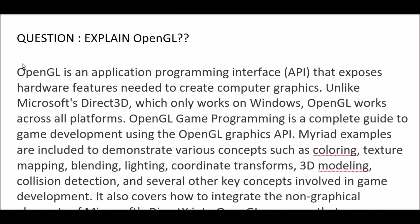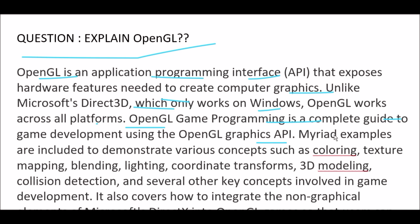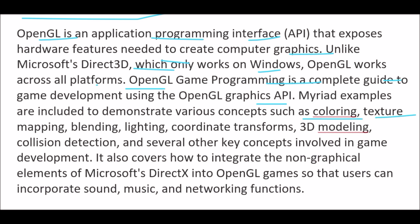Next question: Explain OpenGL. OpenGL is an application programming interface (API) that exposes hardware features needed to create computer graphics. Unlike Microsoft's Direct3D, which only works on Windows, OpenGL works across all platforms. OpenGL game programming is a complete guide to game development using the OpenGL graphics API. Myriad examples demonstrate concepts such as coloring, texture mapping, blending, lighting, coordinate transforms, 3D modeling, collision detection, and other key concepts in game development. It also covers integrating non-graphical elements of Microsoft DirectX into OpenGL, so users can incorporate sound, music, and networking functions.